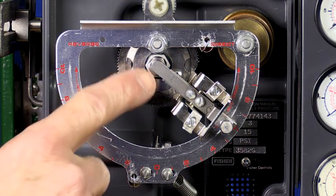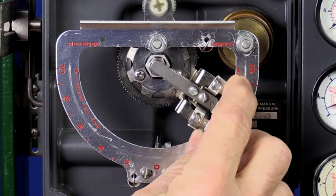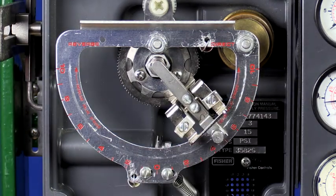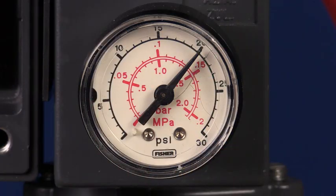The zero adjustment is done with the nozzle, and the span is adjusted by moving the flapper assembly along the summing beam. We have our air supply plumbed to the positioner and can see on the supply gauge the regulator is set to, in this case, 20 psi.